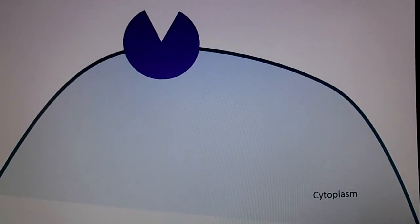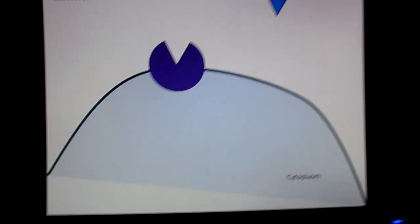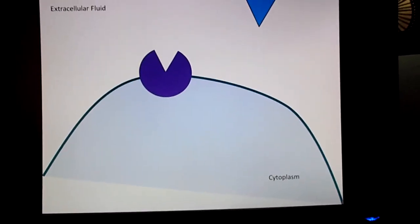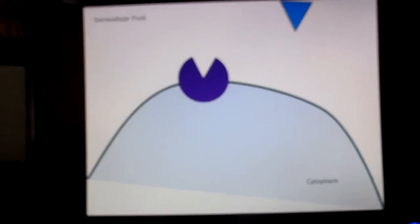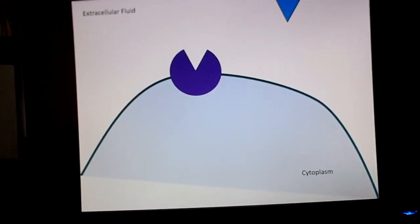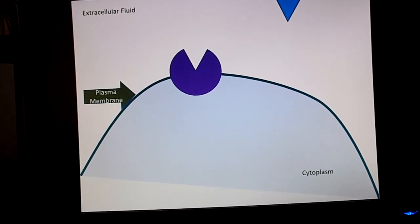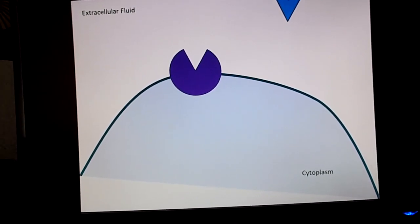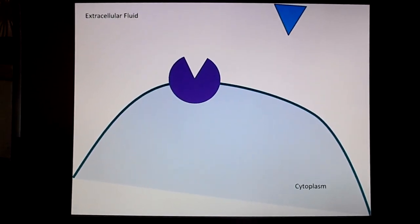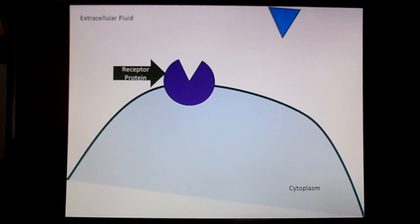So inside a cell, we have some parts. We have a plasma membrane, and in the plasma membrane we have proteins. Now these proteins have different jobs. This protein shown here in purple, for example, has the job of a receptor protein.